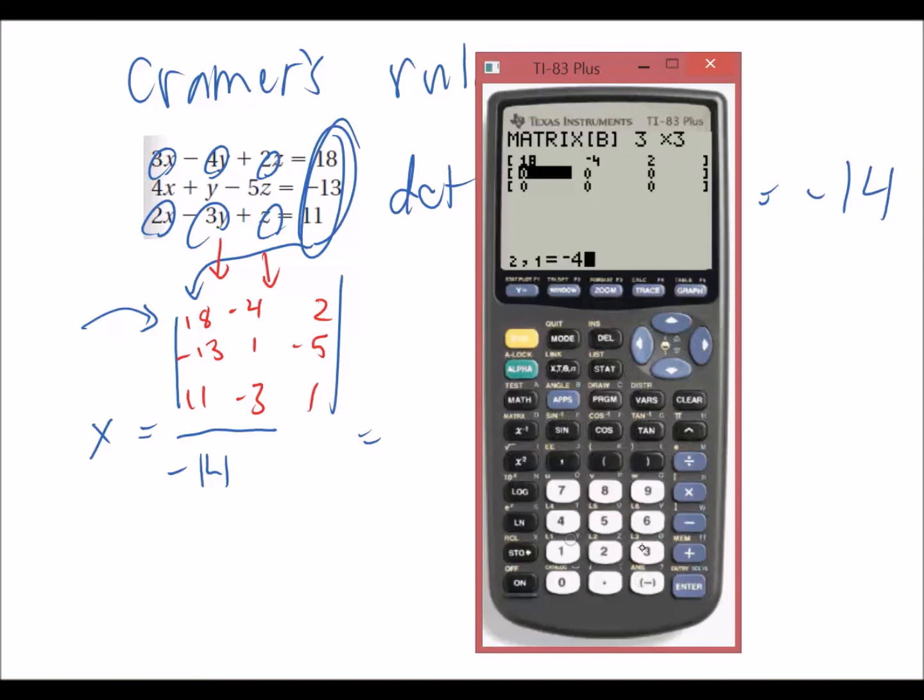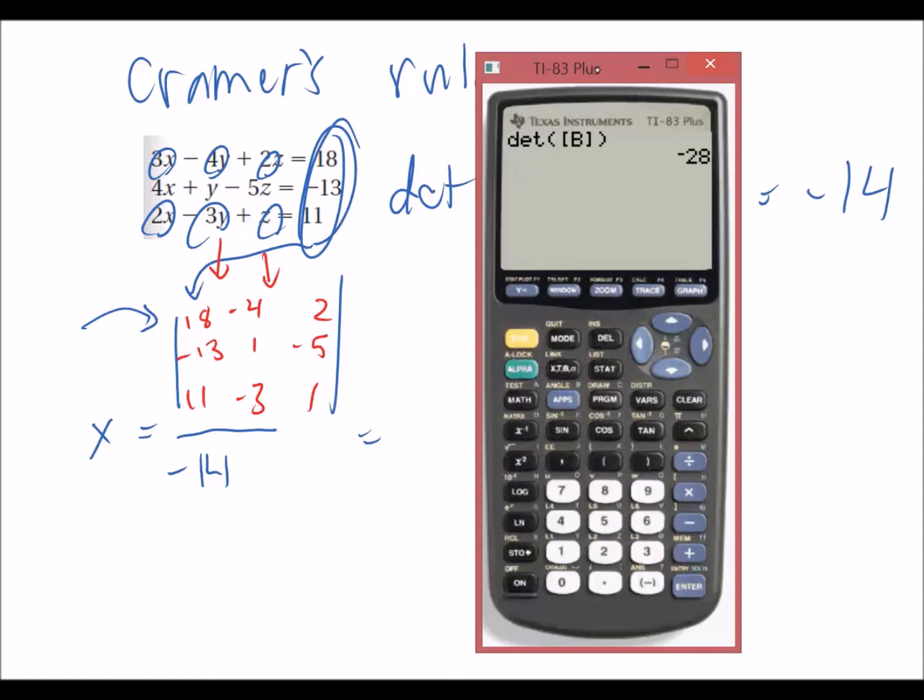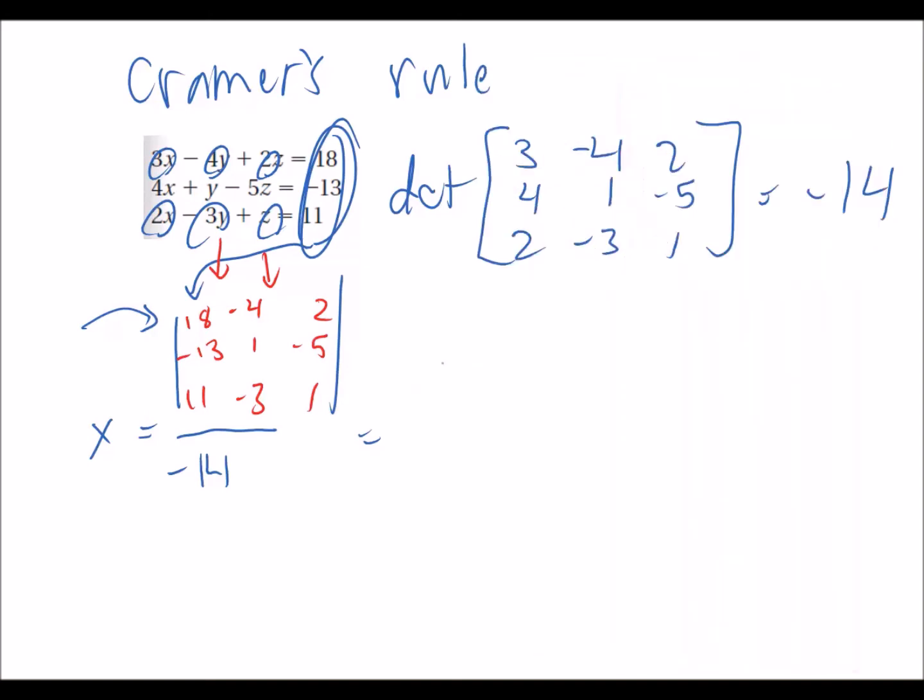Negative 13, 1, negative 5, 11, negative 3, 1. We'll quit. We will find the determinant of that. So math, determinant, matrix B, that's the one we want. It's negative 28. So X is negative 28 over negative 14. The answer is positive 2.